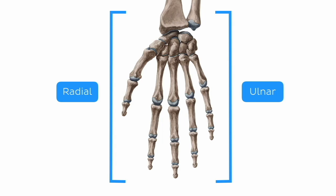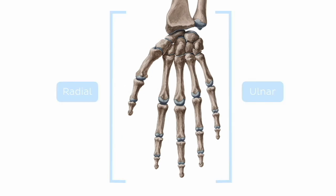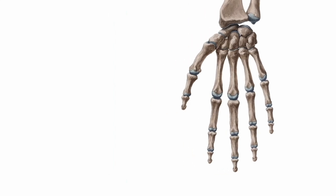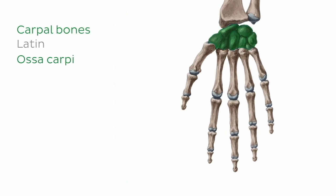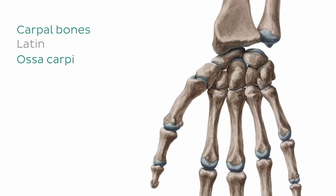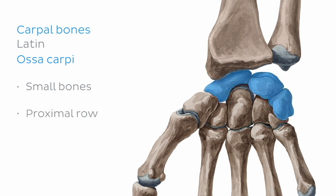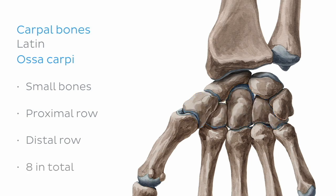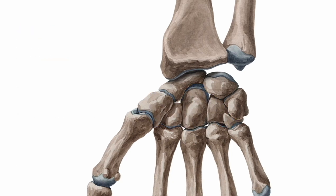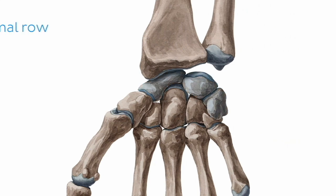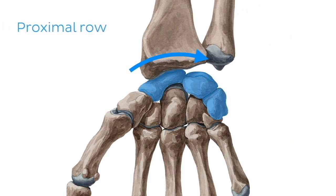Now that we know what we're looking at, we can delve into the bones themselves. As we mentioned earlier, the carpals are a group of eight bones located at the proximal aspect of the hand. This cluster of small bones can be delineated into two rows — one proximal and the other distal. Grouping them off like this may make it easier to study them. Let's run through the carpal bones of the proximal row, moving from lateral to medial.